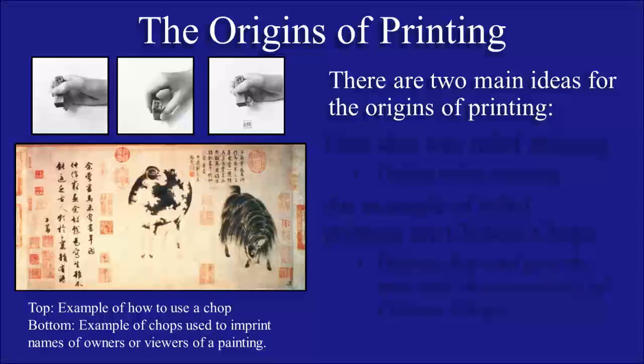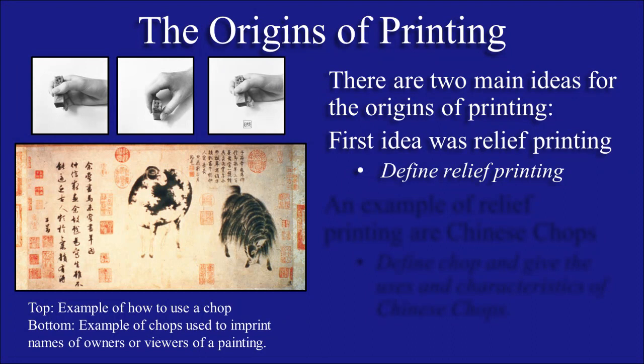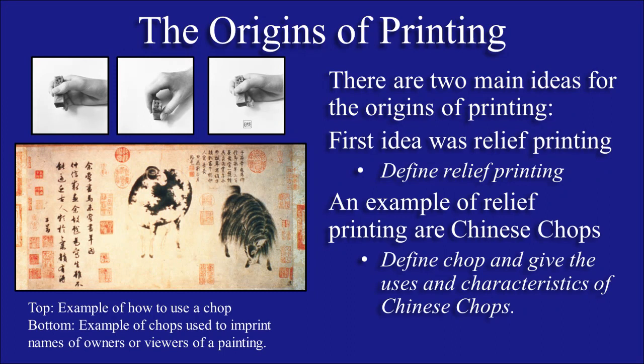Now that we've talked about paper and calligraphy, let's talk about the origins of printing. There are two main ideas for the origins of printing. The first idea centers around the engraved seals used to make identification — these seals are called Chinese chops. It is believed that these evolved into printing. This type of printing is called relief printing. I want you to define relief printing and define chop, and give the uses and characteristics for Chinese chops.